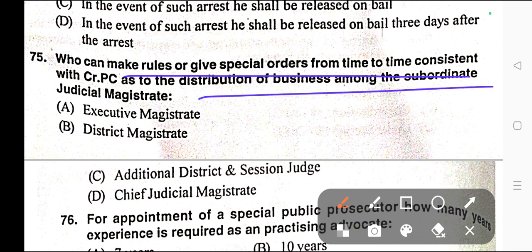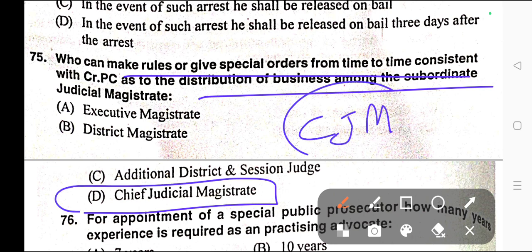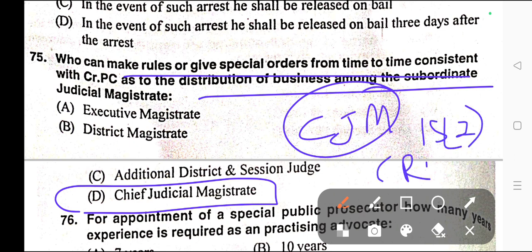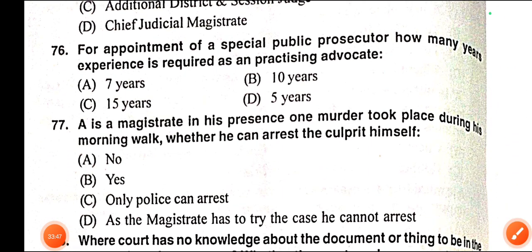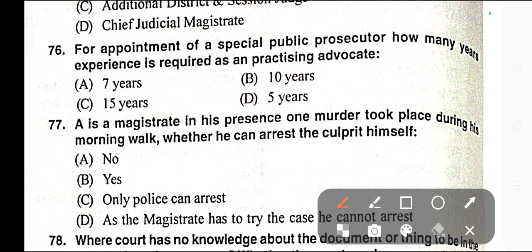Question number seventy-five: Who can make rules or give special orders from time to time consistent with CrPC as to the distribution of business among subordinate Judicial Magistrates? Correct answer is option D — the Chief Judicial Magistrate, provided under Section 15 Clause 2 of CrPC.